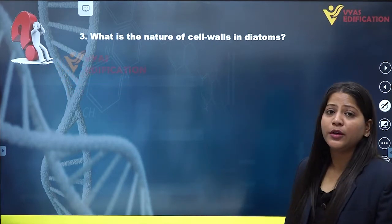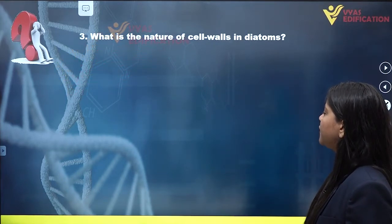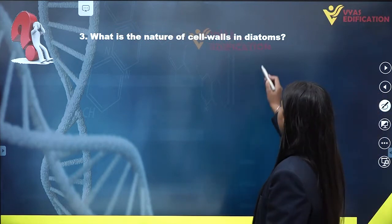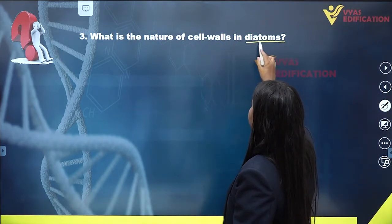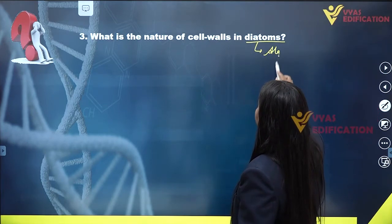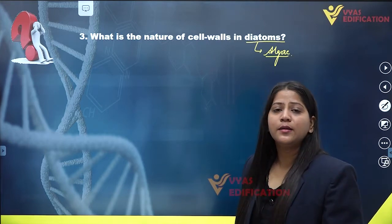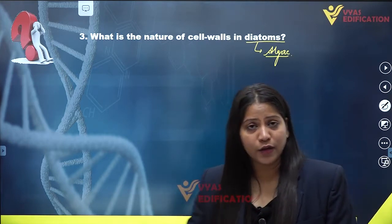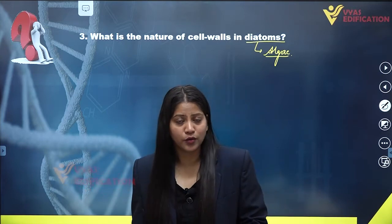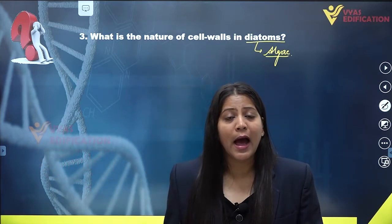Question number three: what is the nature of cell walls in diatoms? First of all, what are diatoms? Diatoms are algae — a kind of algae that dwells in glass houses.